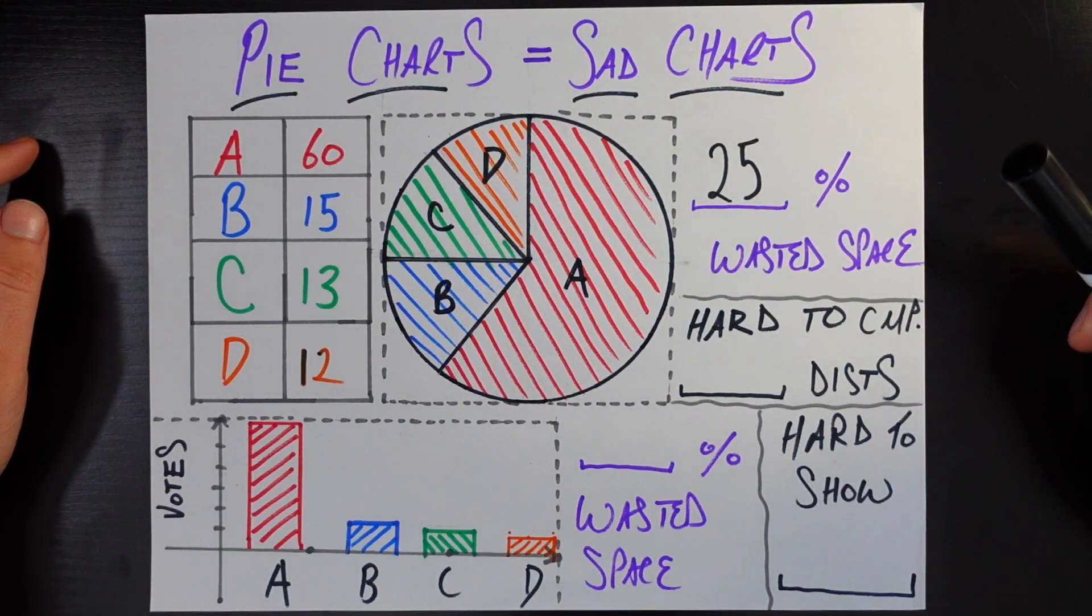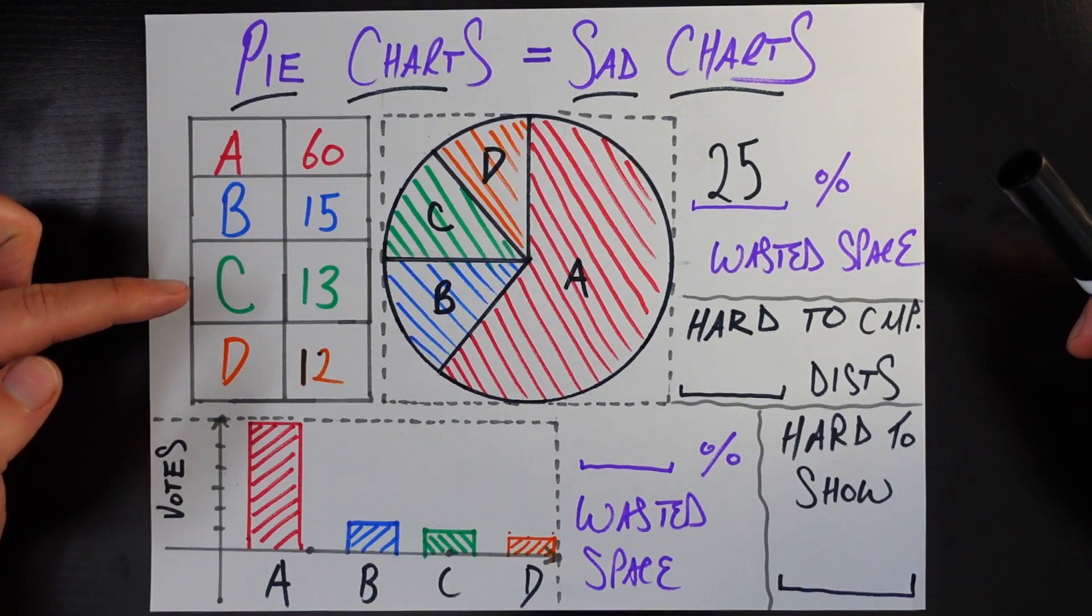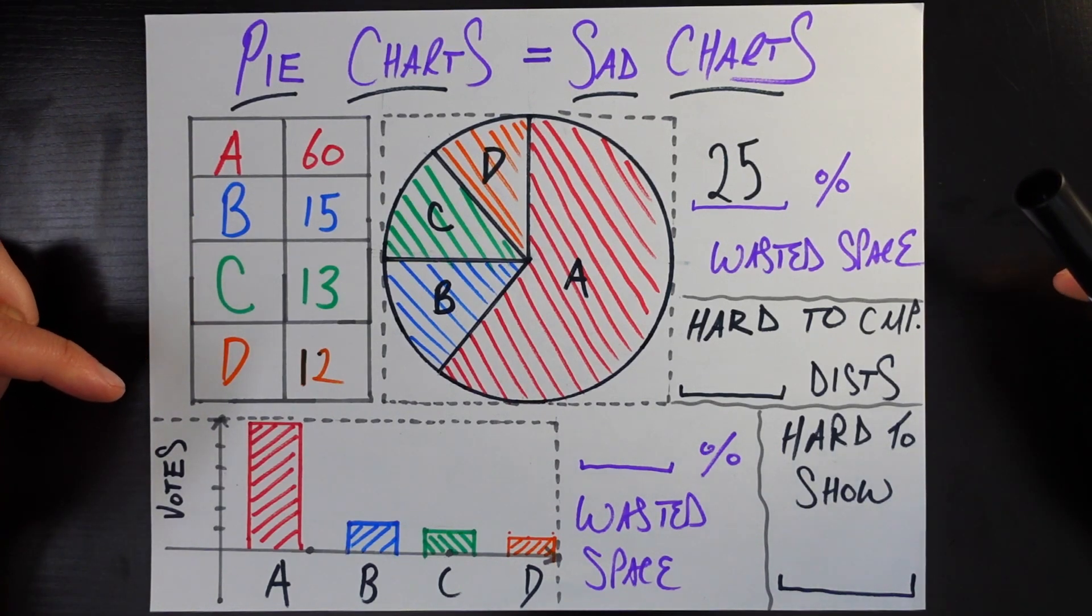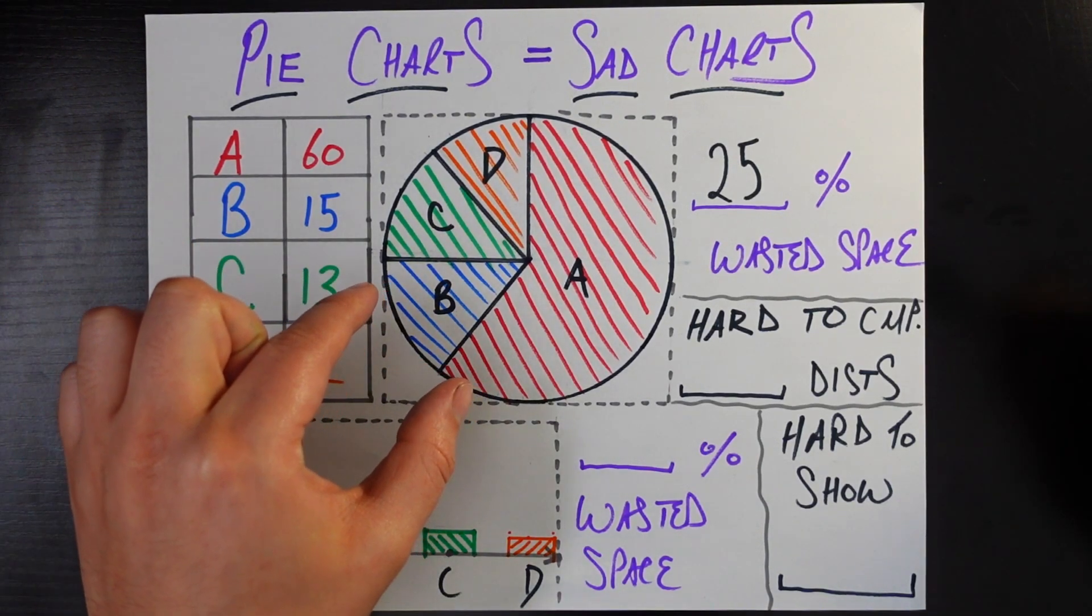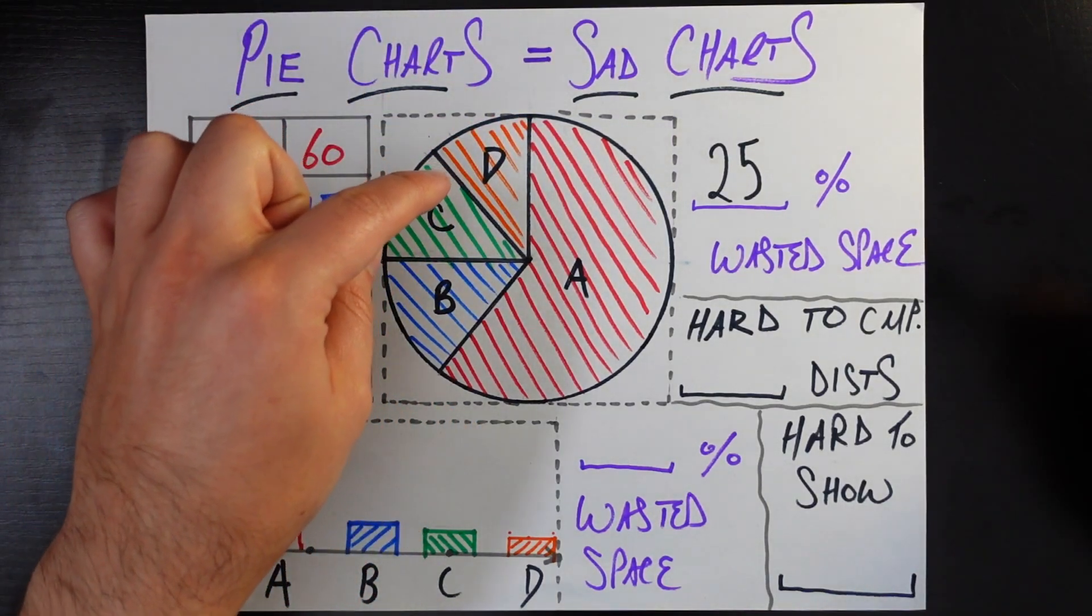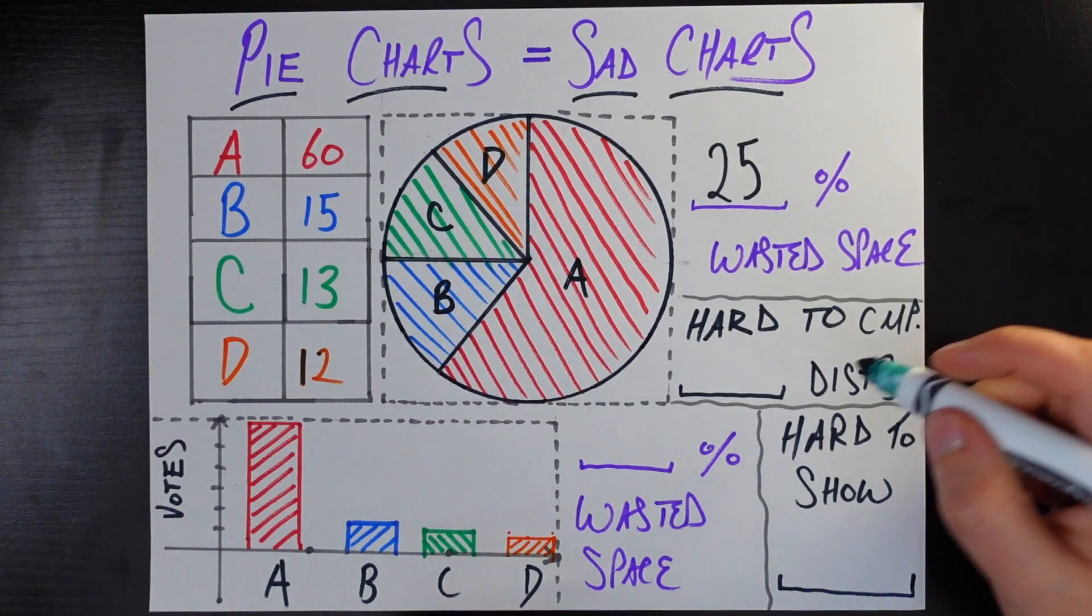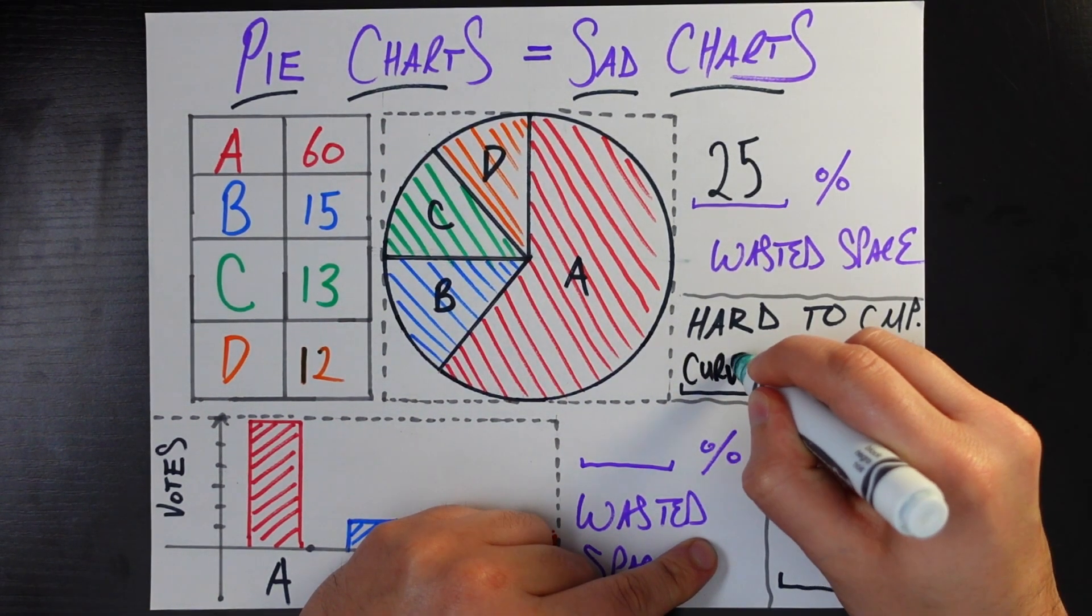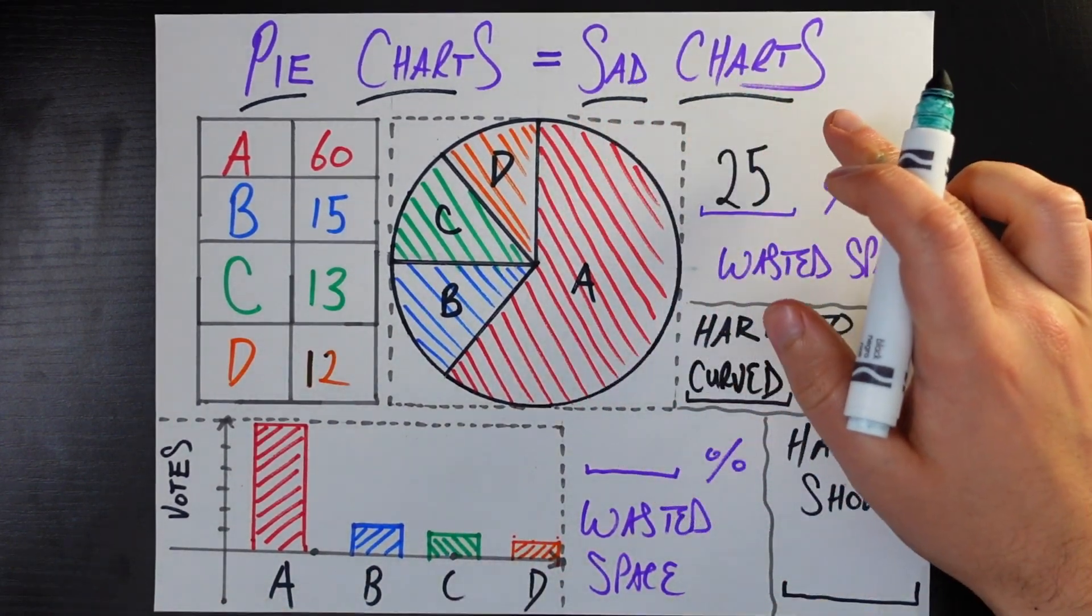For example, A is pretty obvious because it's just so much bigger than the others. But in this case, this B, C, and D, 15, 13, and 12, it's not that easy, at least for me, to know which is bigger than the others. I mean, I guess it's a little obvious that B and C are bigger than D, but is B bigger than C, or is C bigger than D? It's really hard for humans to compare curved distances. That's another reason that pie charts equals sad charts.